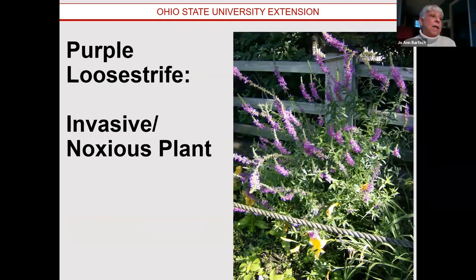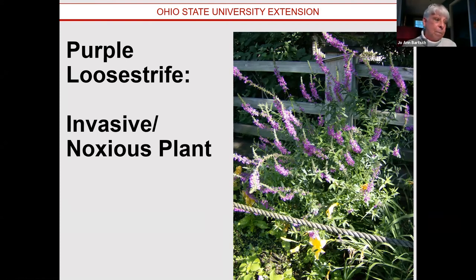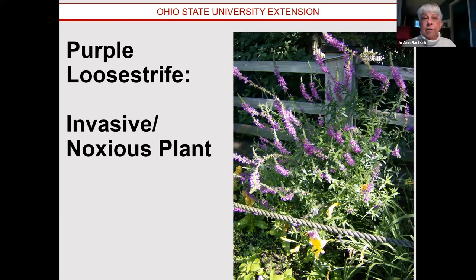Here's purple loosestrife — the poster child for invasive takeover. By definition it's not native. It's so invasive it's considered noxious, and it is considered invasive and noxious in much of the United States. It out-competes other plants that are hosts for native insects. There is a native loosestrife — it is yellow and doesn't look anything like this. Other dangerous invasives include garlic mustard and honeysuckle. Some of those are so toxic to caterpillars that when the female accidentally lays her egg on the wrong plant, the hatching larvae are poisoned.